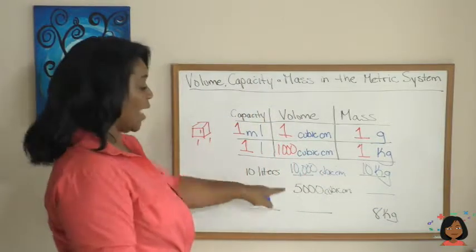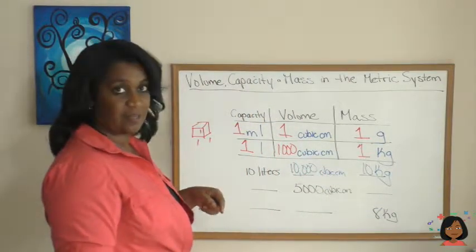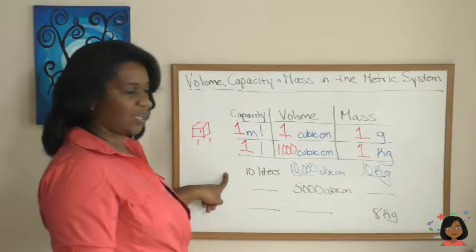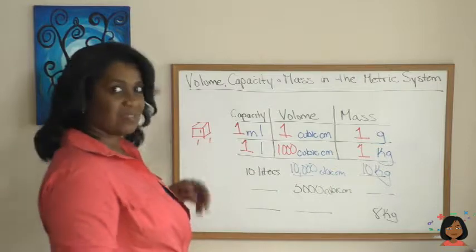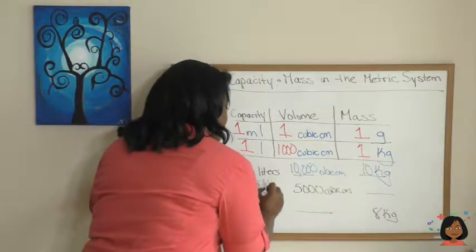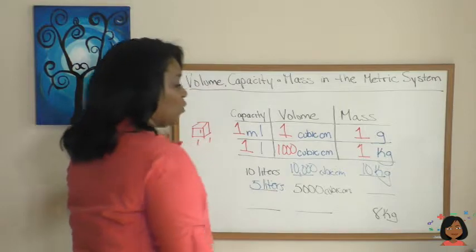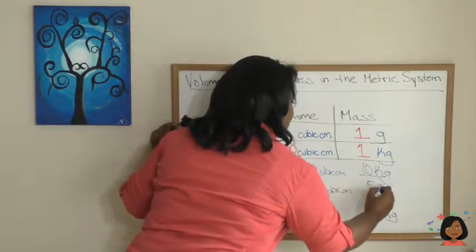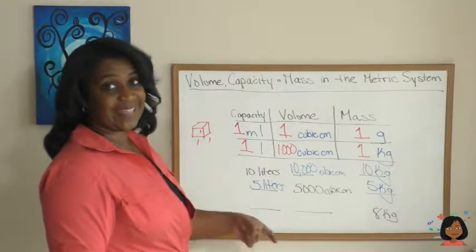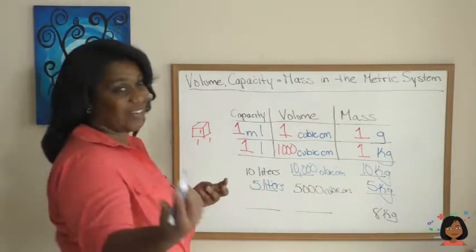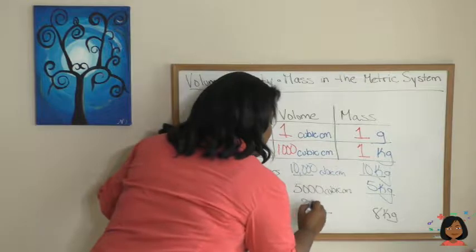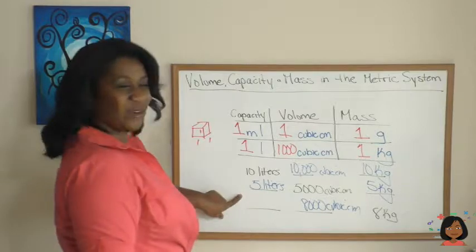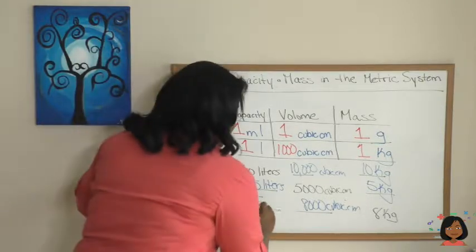Let's do it now. We have 5,000 cubic centimeters. We want to go over here to capacity. How many liters is that going to be? Well, if we have 5,000, it's going to be 5 liters. And what about kilograms? 5 kilograms. And we've got 8 kilograms. So now we're working backwards. We're going to have 8,000 cubic centimeters and 8 liters as well.